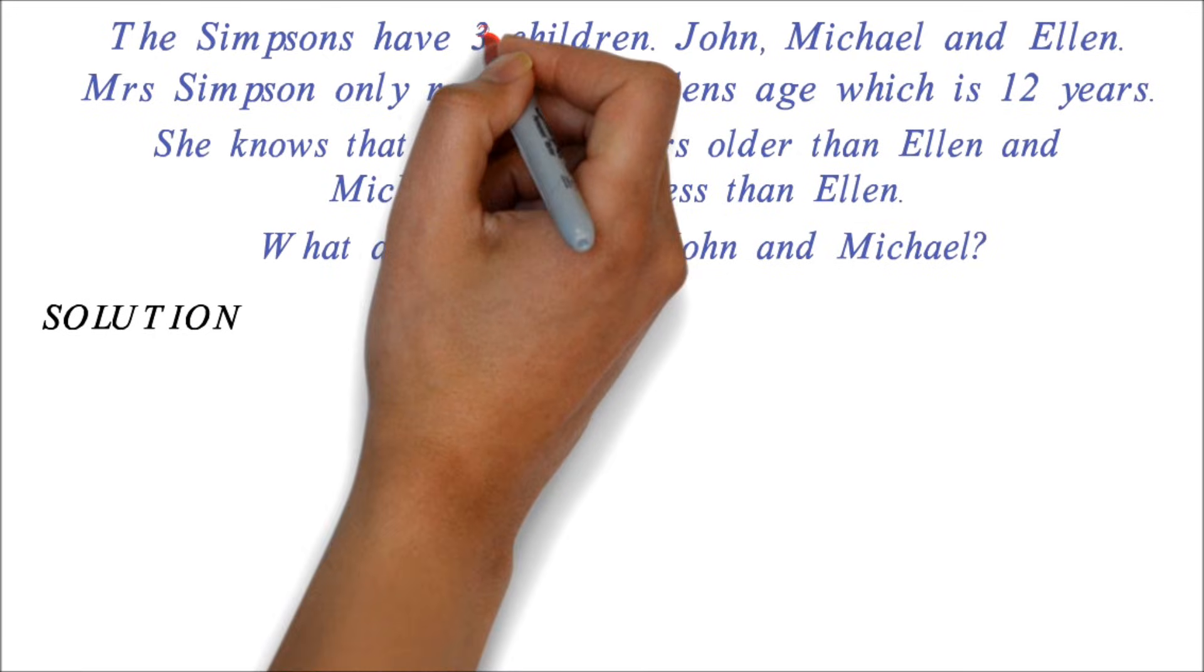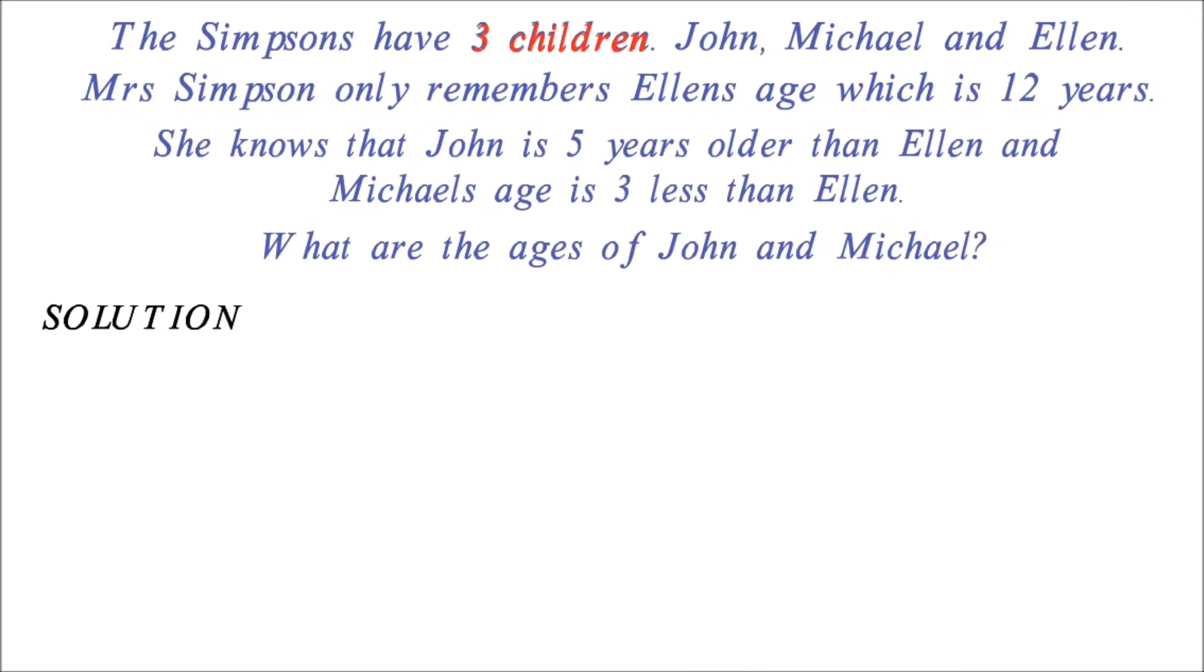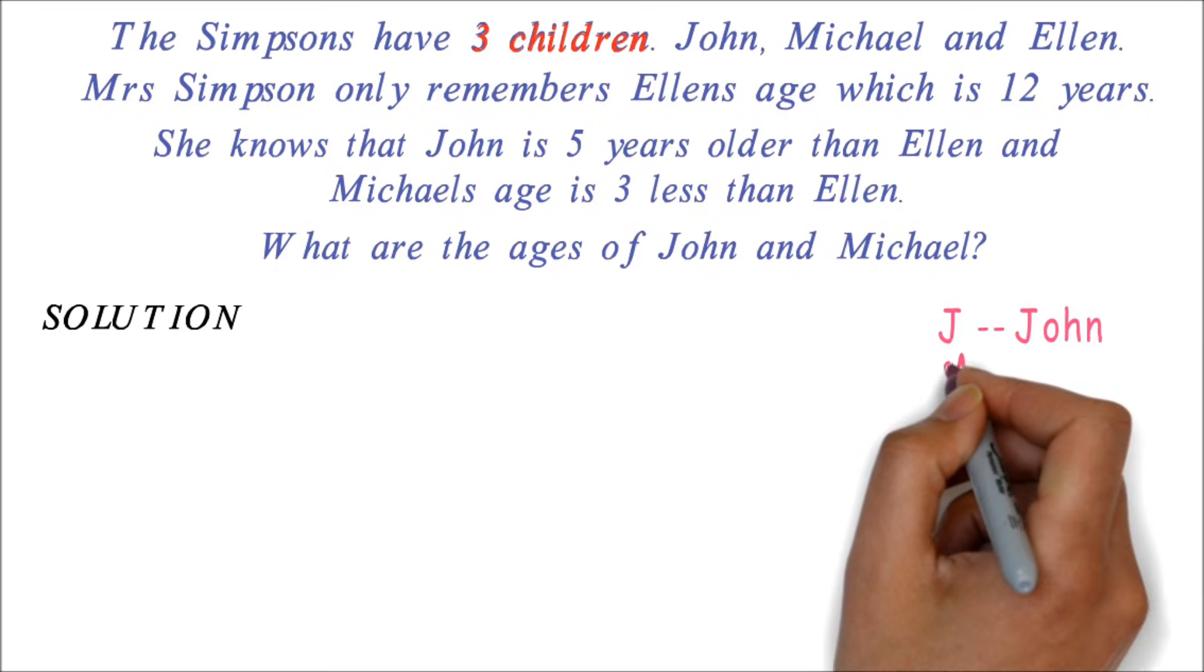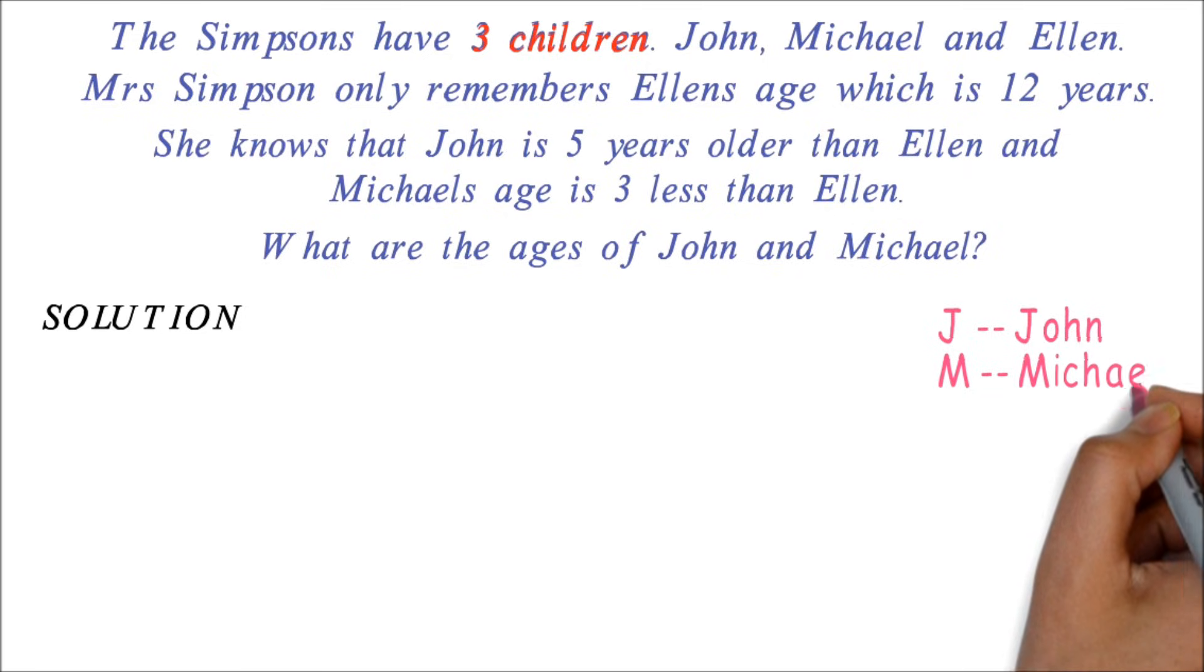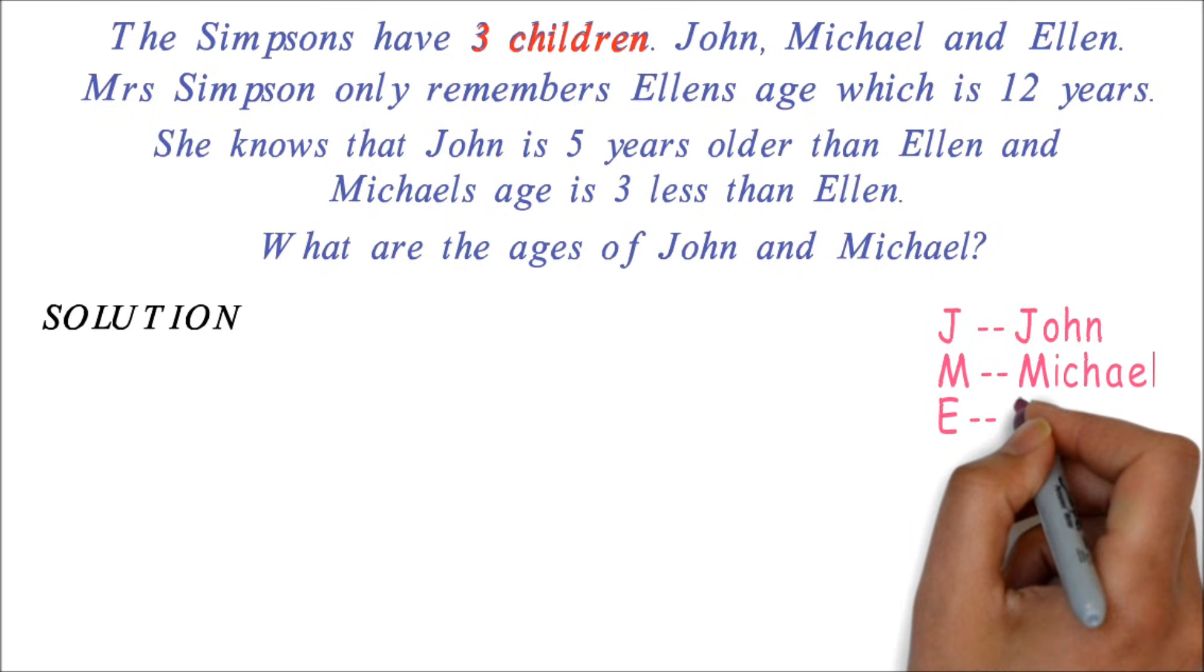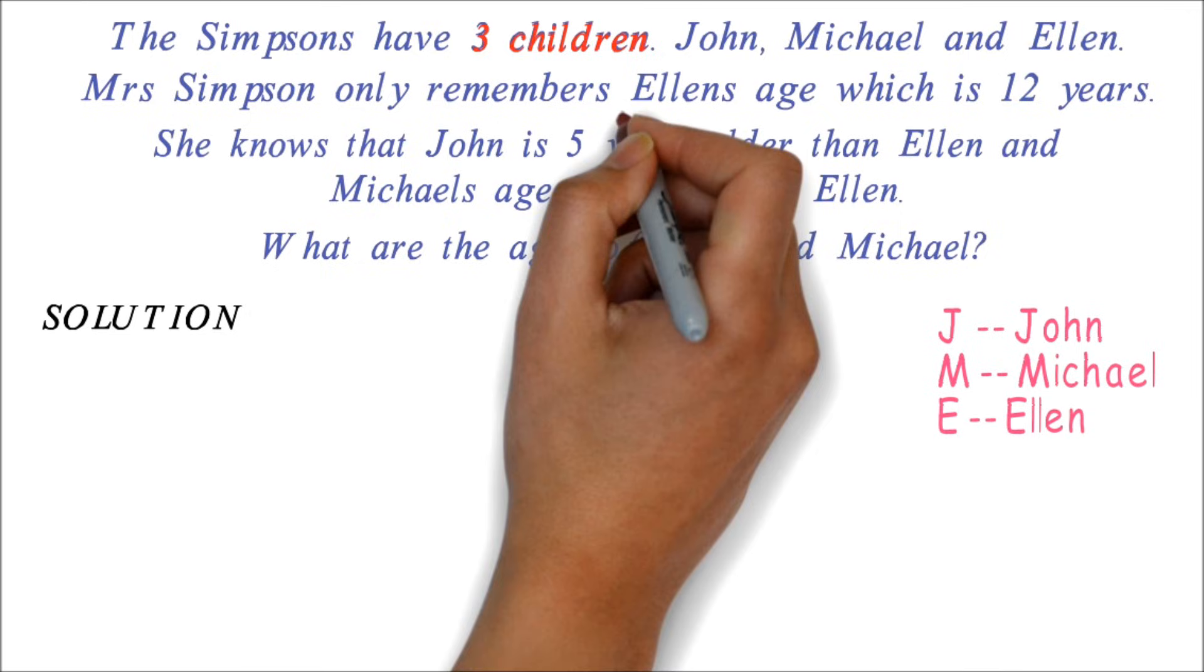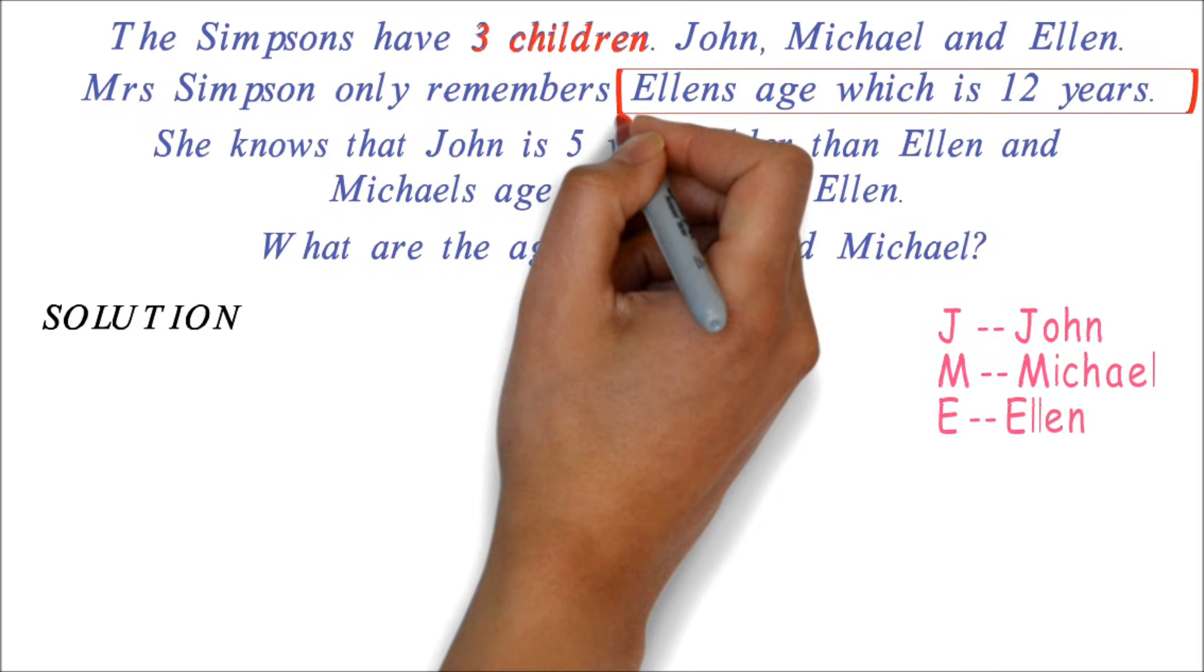The first thing we know is that there are three children. Let's represent them this way. The next information we are given is Mrs. Simpson remembers Ellen's age, which is 12.